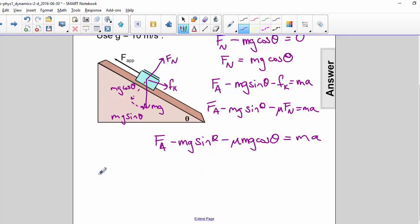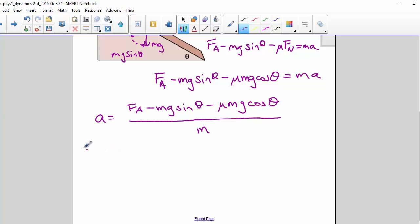Now we need to divide both sides by m. Now we can plug in our values. The applied force is 40 newtons, m is 5, g is 10, sine of 30 degrees, minus mu, which is 0.3.